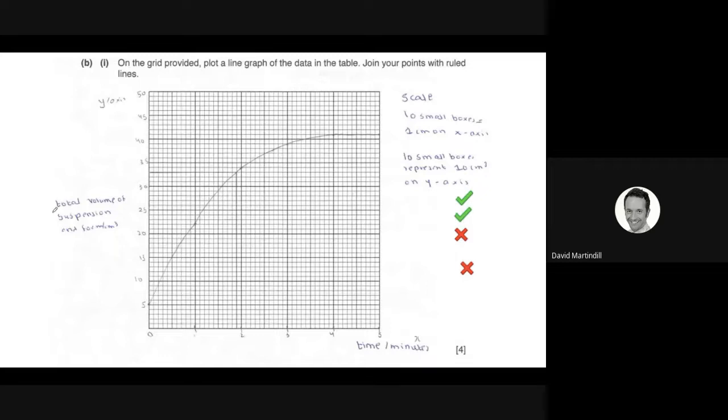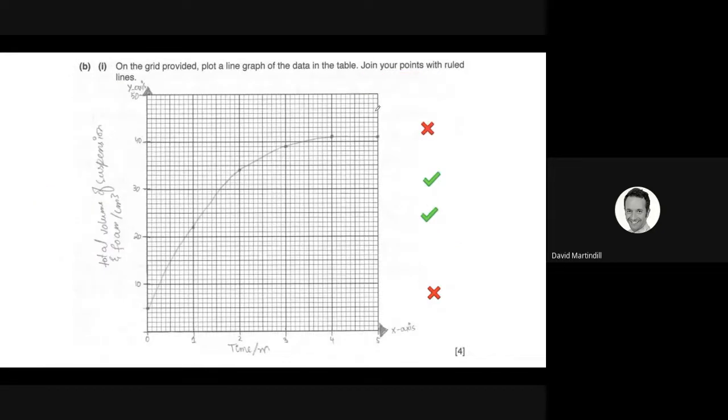This graph, the student's been a bit lazy because we should have had mean here. The table is not shown. What they haven't done, as you can see, is they've joined their points with curves. And it clearly says that they had to join them with ruled lines. This student's done the same. They haven't joined them with ruled lines, as you can see. It's a curve.